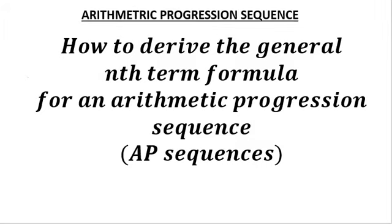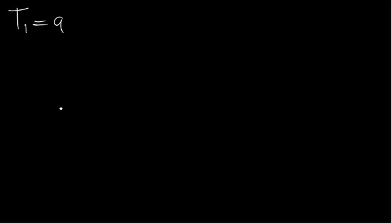This video is all about how to derive the general nth-term formula for an arithmetic progression sequence. For the arithmetic progression sequence, let's assume that the first term is equal to A. It has a common difference, and the common difference between the second term and the first term is D.